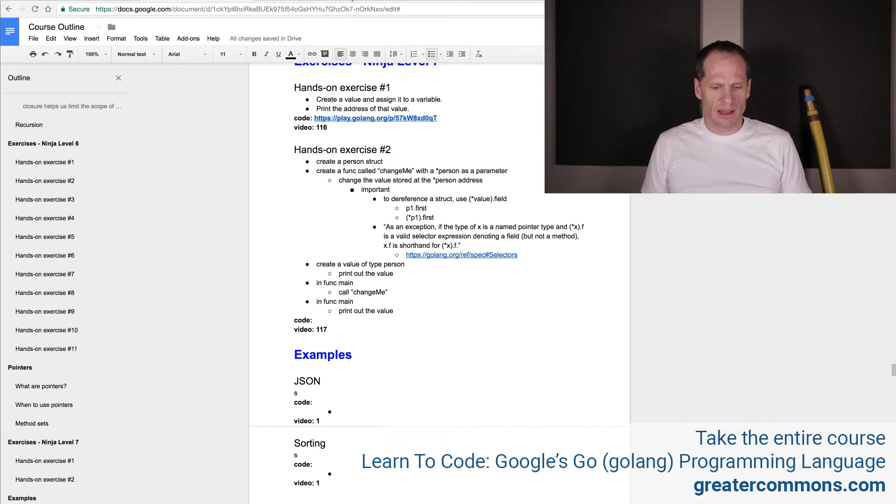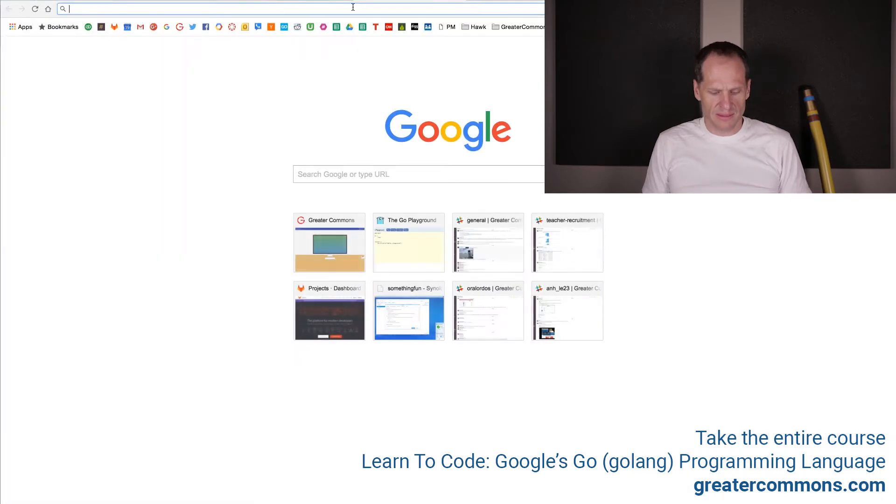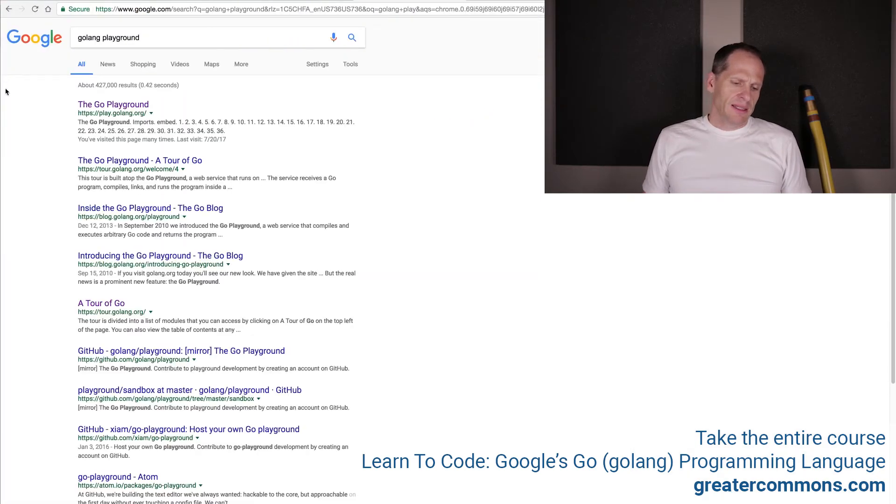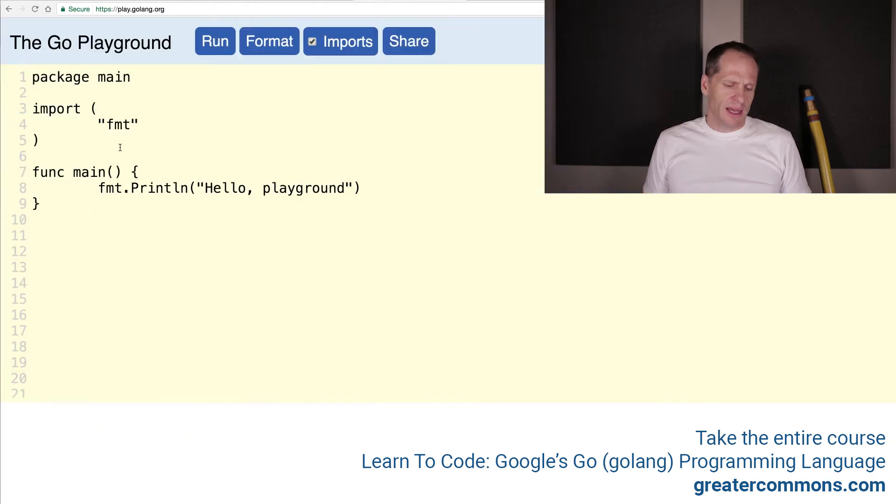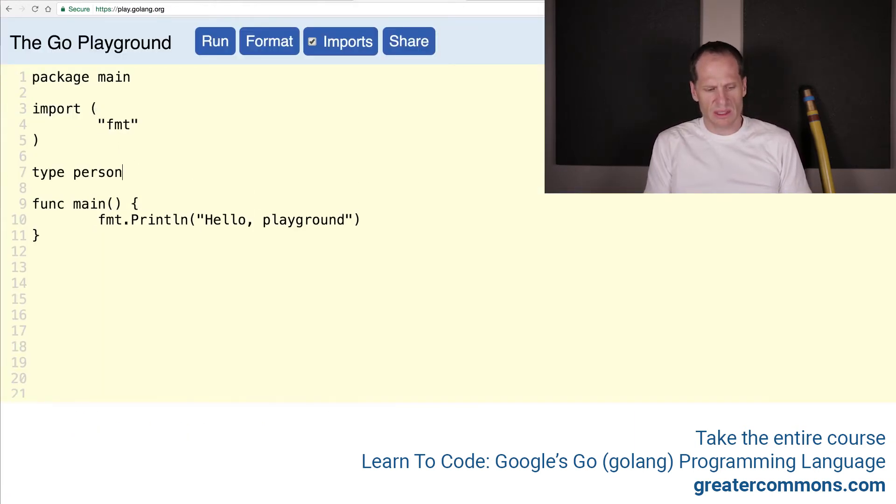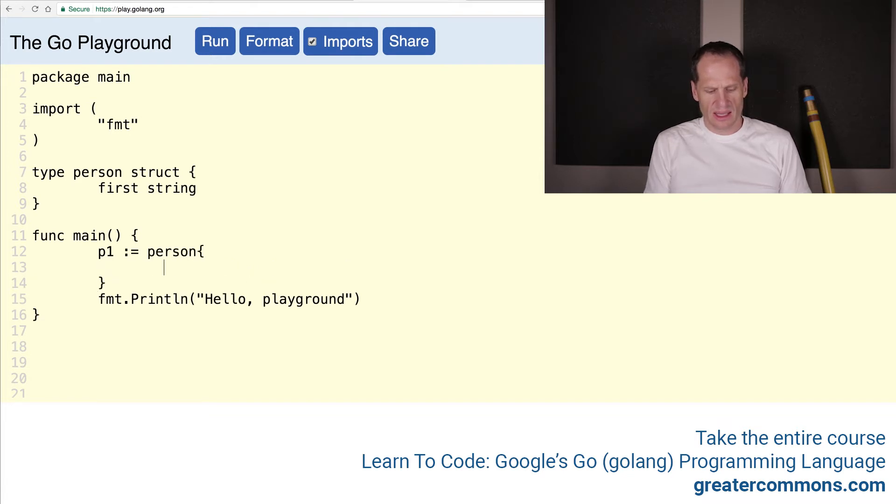So I'm going to come up here and launch the Go Playground. And we're going to create type person struct. And in it, we're just going to keep it simple. We're going to do first and have it be a string. And then we'll create p1 colon equal person composite literal, and first, and that'll be James Bond. And let's change this from first to name. Since we're not just using first, let's be precise.